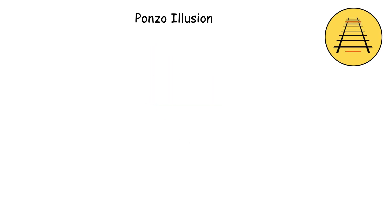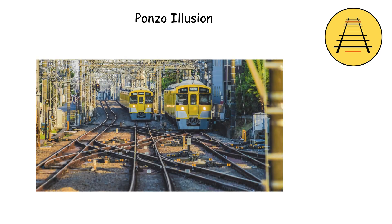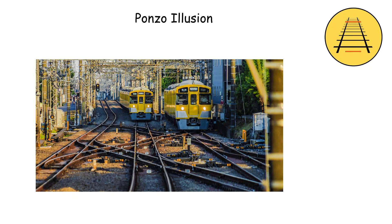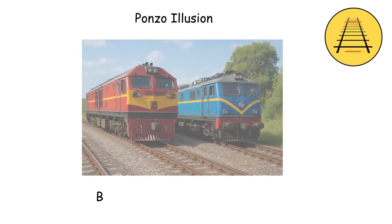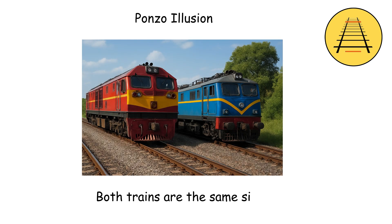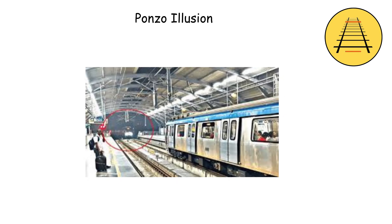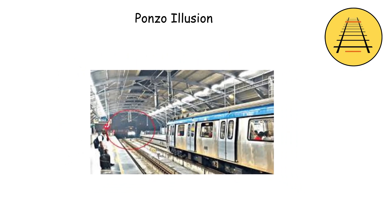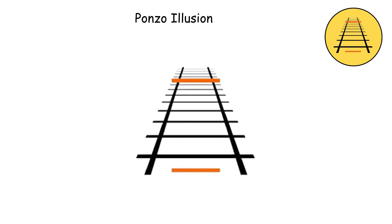The Ponzo Illusion. Let's say you're looking down railroad tracks stretching into the distance. You see two identical trains on those tracks, one closer to you and one further away. Even though both trains are the same size, the one further down the tracks looks massive compared to the closer one. That's the Ponzo Illusion messing with your head.